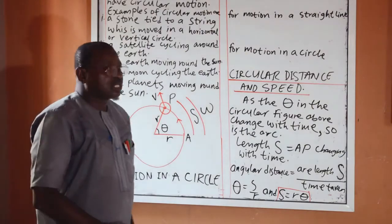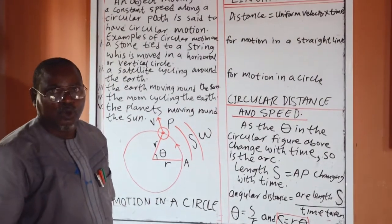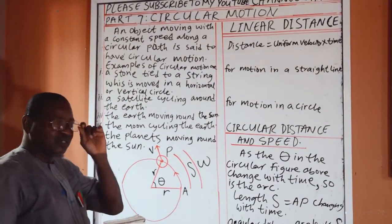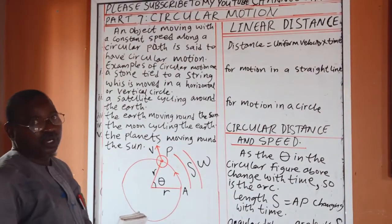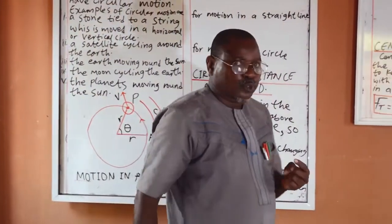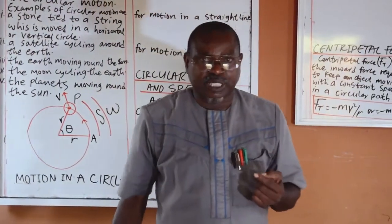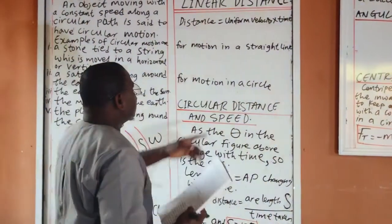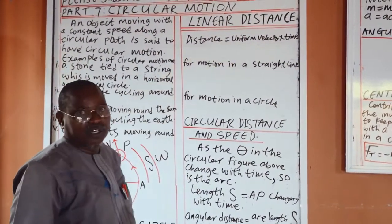We are going to start from known to unknown. In the last tenth set of video, we discussed our distance, velocity, speed, acceleration and the rest of them. So, we are going to start with linear distance, which you are familiar with.